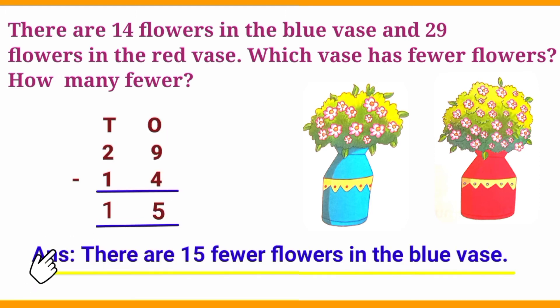So the answer is: there are 15 fewer flowers in the blue vase. Are you clear, children?